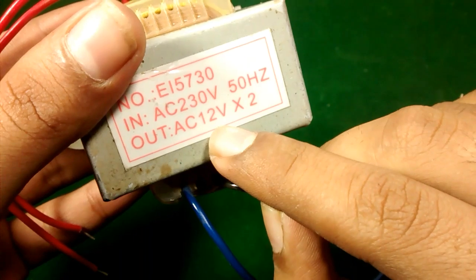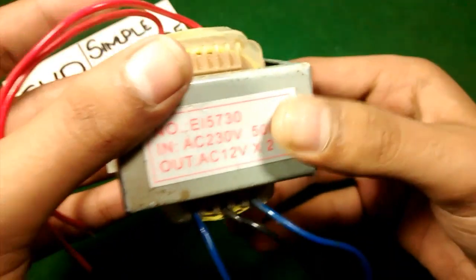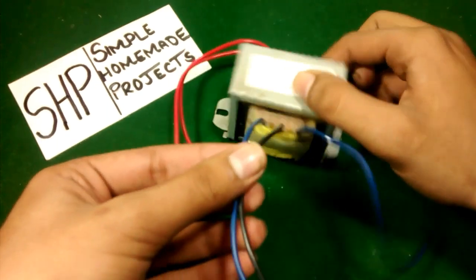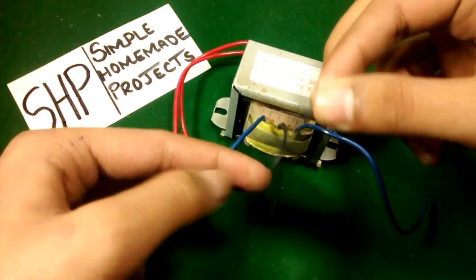First of all, you have to read how much voltage is in the output coils and how many coils there are. Two coils. So this is the common wire for the two coils, which is the central wire, and here it is black.